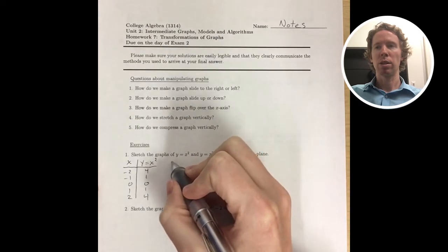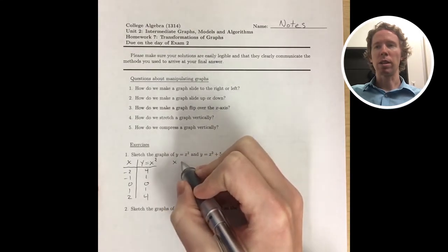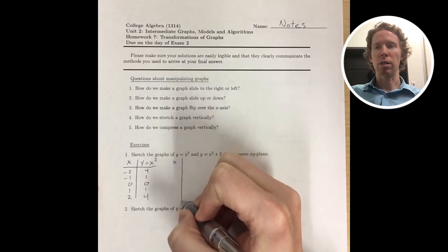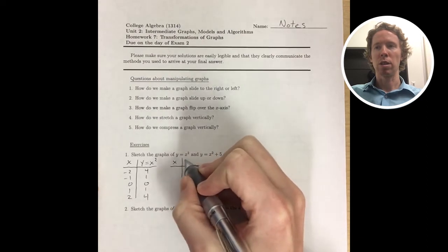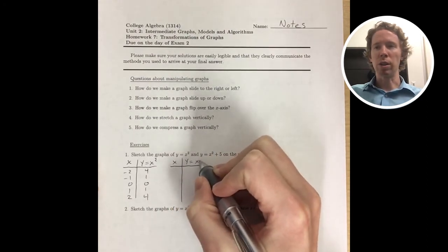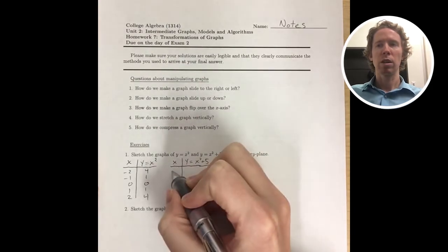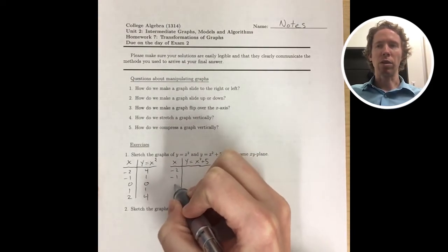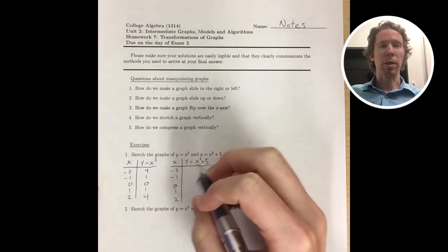So I squared those x values, and now I'm going to make a table of the second equation. And you can see, all I need to do is take the y values that I got from the first equation and add 5 to all of them, because I picked the same x values.